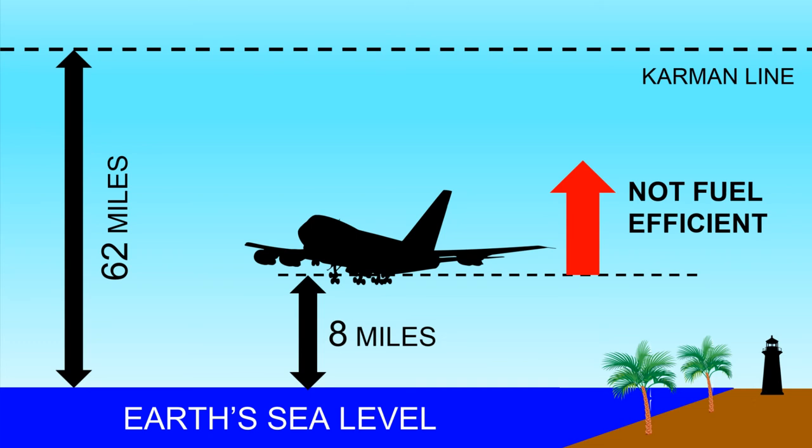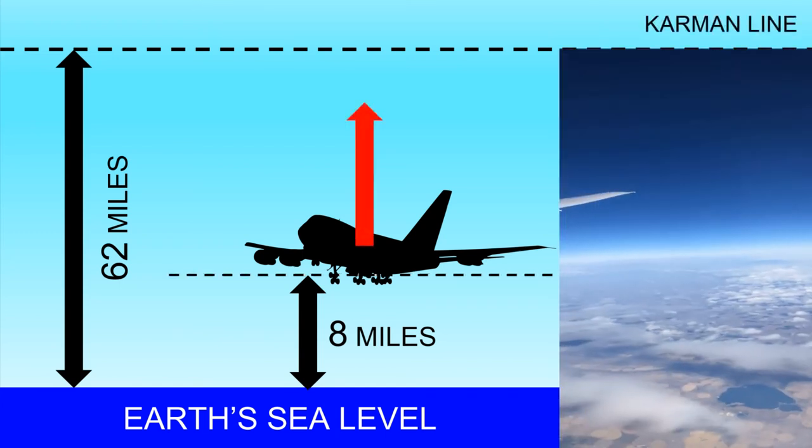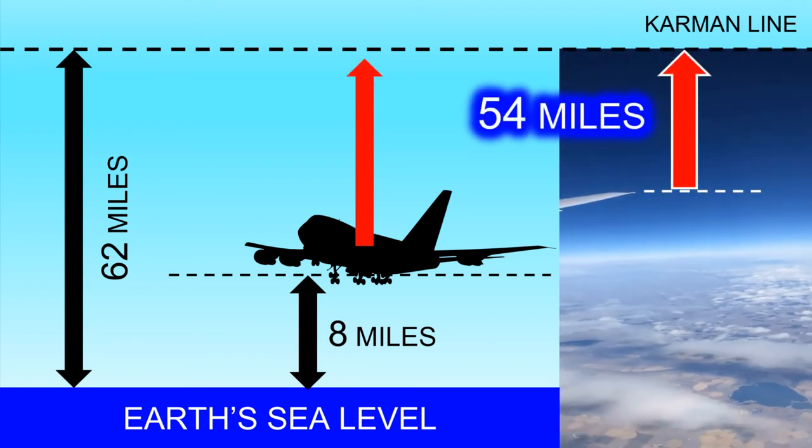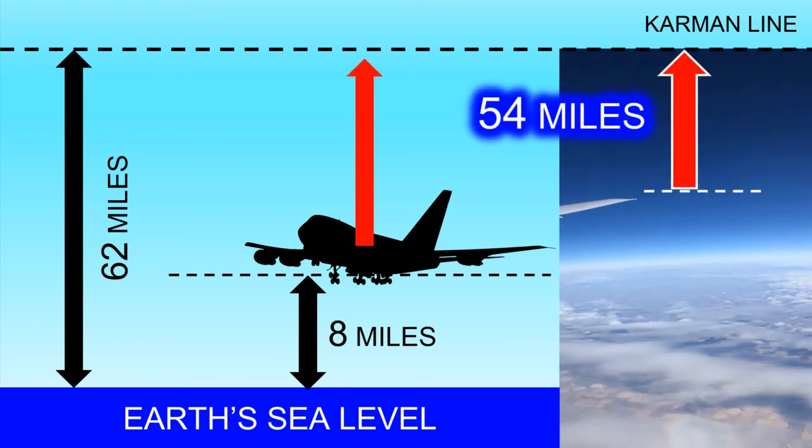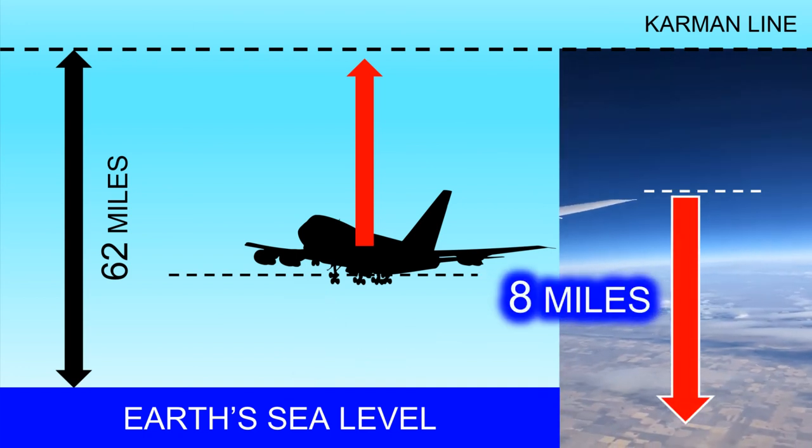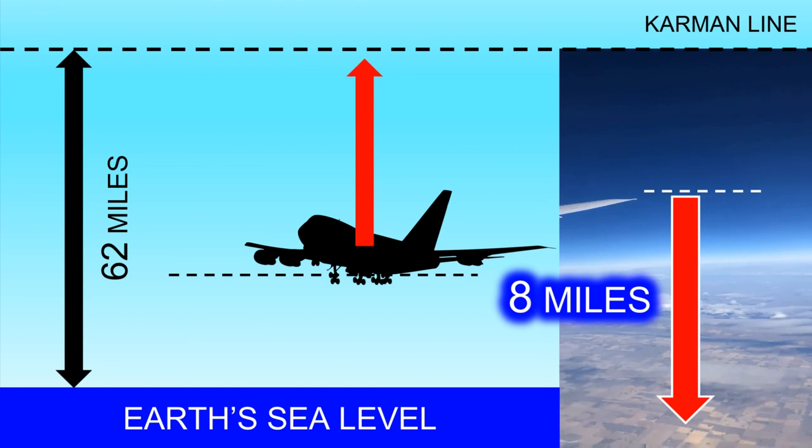And it's not fuel efficient for airlines to fly above that height. Or of course, it has to do with money. So when you look up from the airplane's window at cruising altitude at the highest leg of your journey, now you know that you still have 54 miles remaining to get to the boundary of the atmosphere. And you're about 8 miles high from ground level.